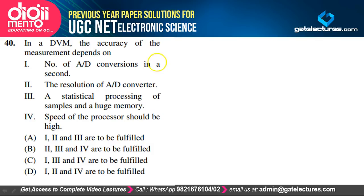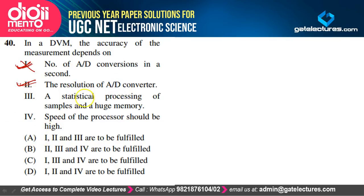In a DVM, the accuracy of measurement depends on: (1) number of A/D conversions per second — false; (2) resolution of the A/D converter — true; (3) statistical processing of samples in memory — true; (4) speed of processor being high — true. Option B satisfies our explanation.